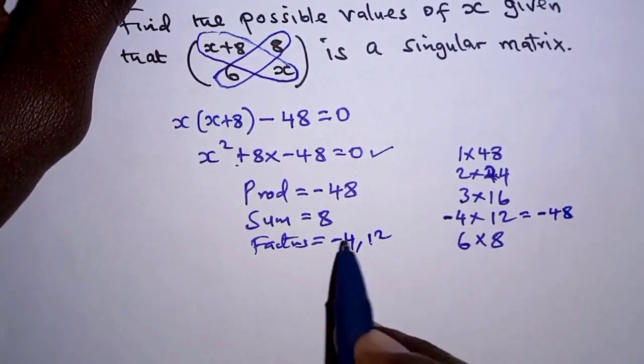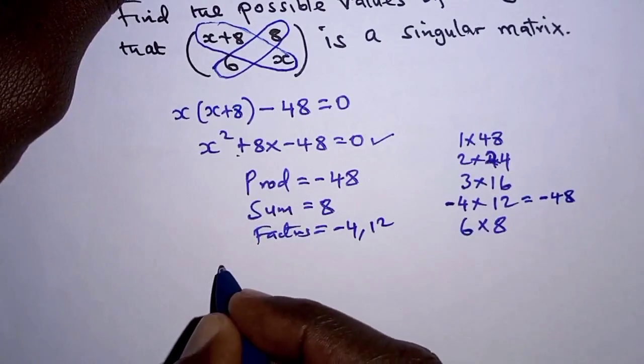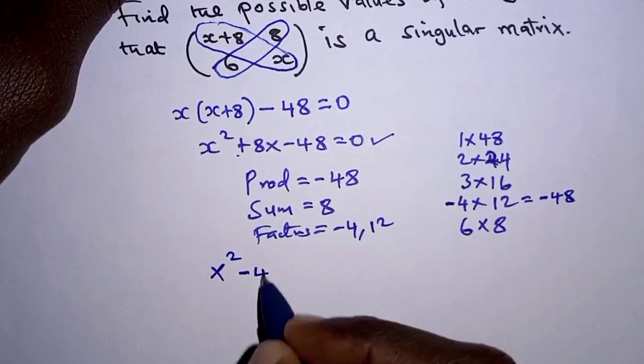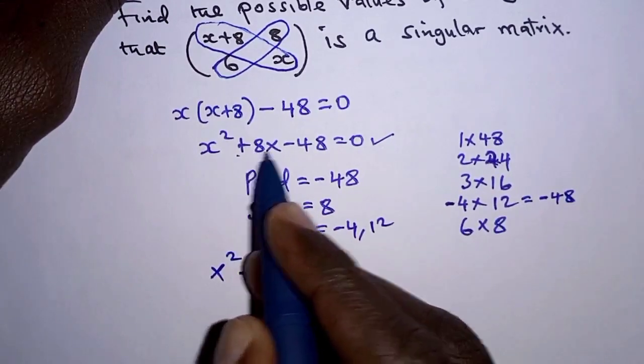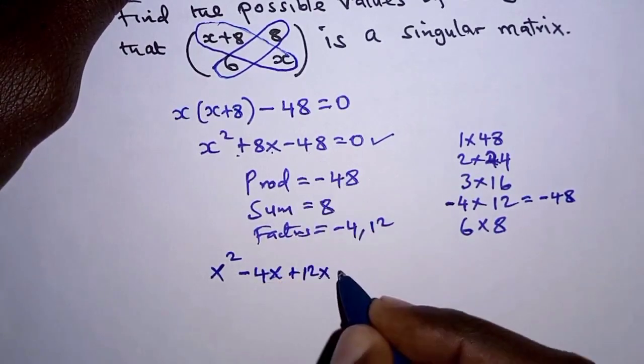This will take the place of 8X, so we have X² - 4X + 12X - 48 = 0.